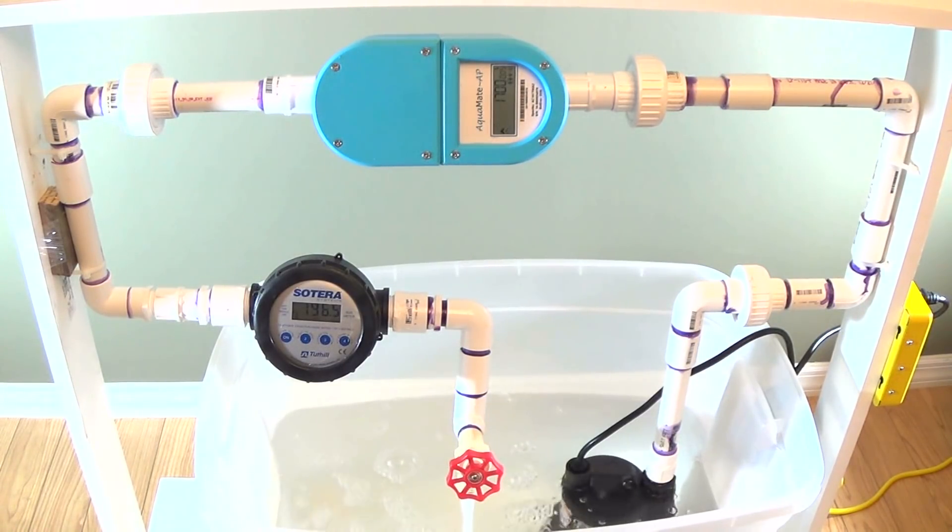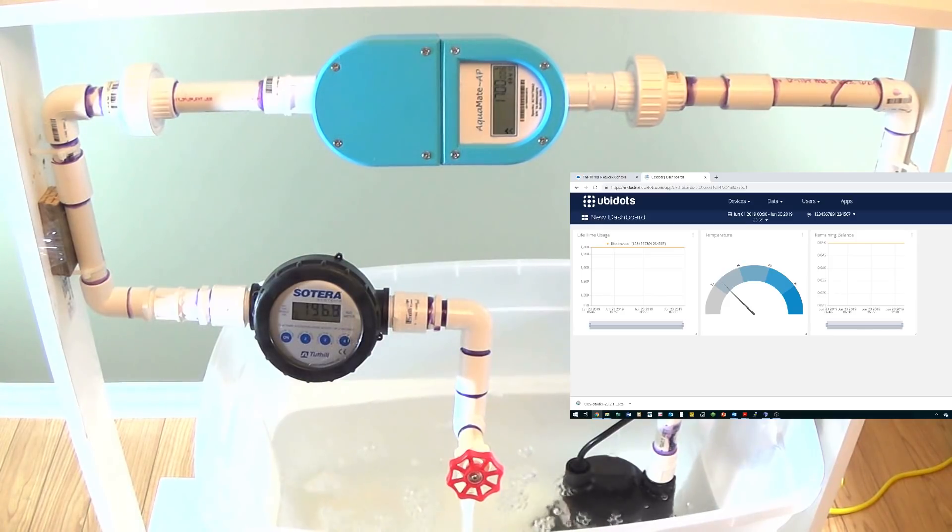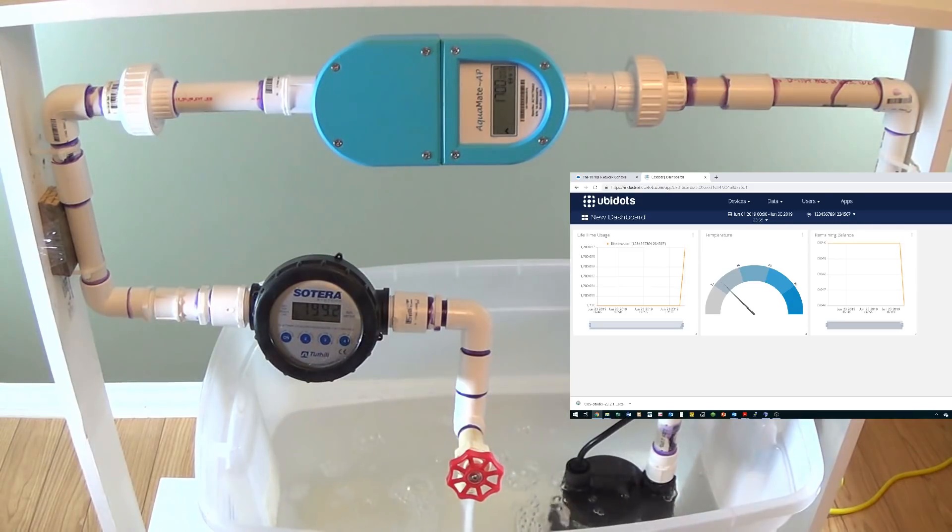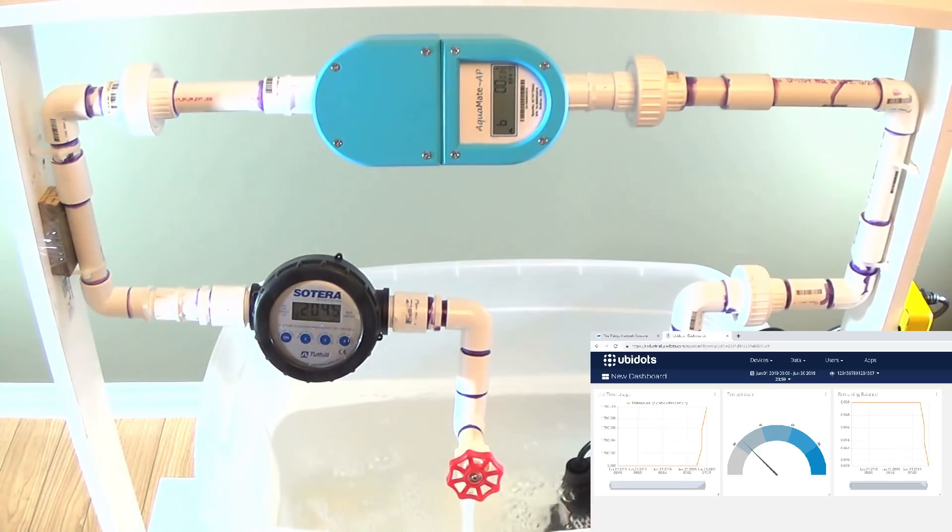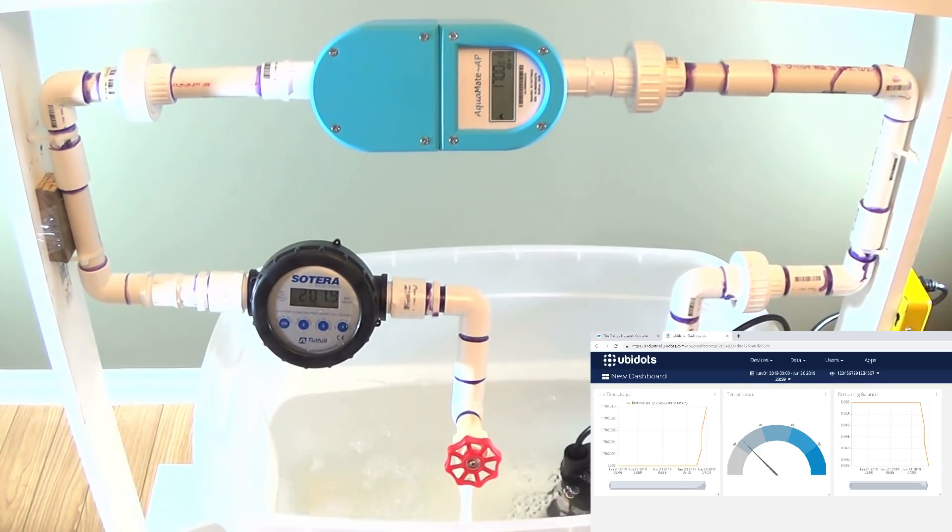We can see the same data being received on the cloud data server and also the graphs. So we are seeing the graph which are updated in real time. We can see that the available balance is now going down. So I'm going to record further all the way to when the balance expires and we'll just keep watching.